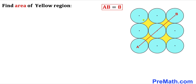In this video we have nine identical blue circles put together as shown in this diagram, such that all circles are tangent to each other. Furthermore, this AB length is 8 units. Our task is to calculate the area of the yellow shaded regions — this area, this area, this area, and this area combined.